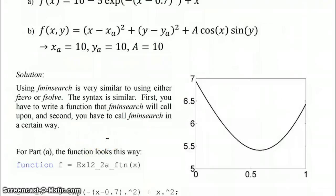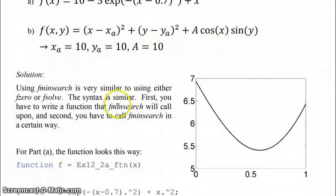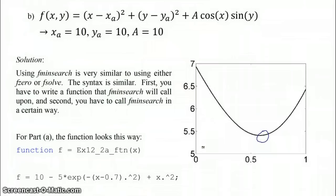For part A, the thing to note is that your function f looks something like this, where you have, it's sort of parabolic, with an obvious minimum near x equals 0.6, and with a value of about 5.5 for the minimum. The function itself is going to look this way, where you have a single input variable x, a scalar output variable f, and here's the way our function is defined.